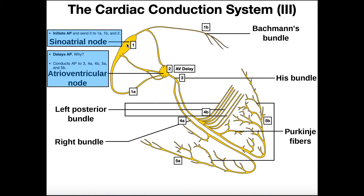When the sinoatrial node depolarizes, that's going to spread action potentials to the cardiomyocytes — those are muscle cells — in this area, so that would be in the right atrium. One route for those action potentials is to go to Bachmann's bundle, that's for the left atrium. When action potentials get to Bachmann's bundle, then the cardiomyocytes of the left atrium contract. And then when the action potential spreads down into the ventricles, when action potentials get there, this area of the right ventricle contracts, eventually coming around to the 5a region, then that region of the right ventricle contracts, and so on.